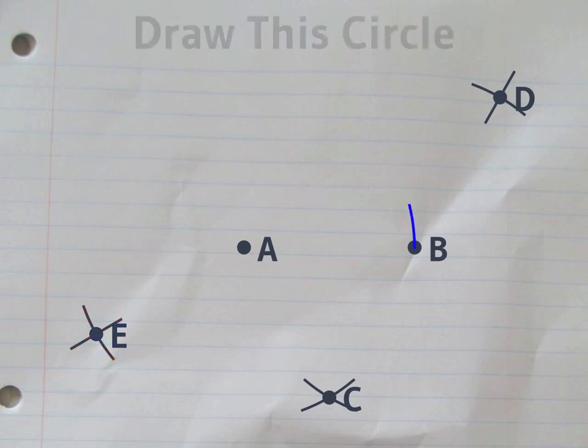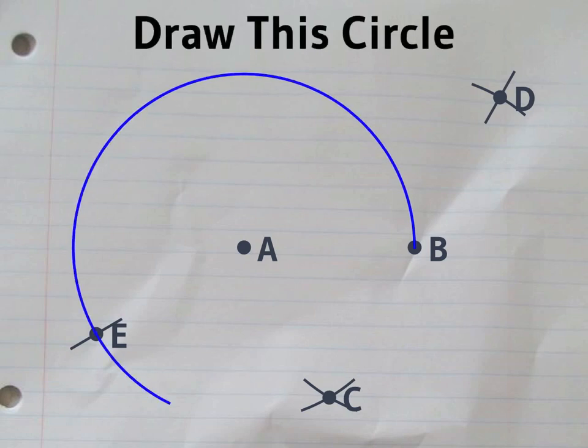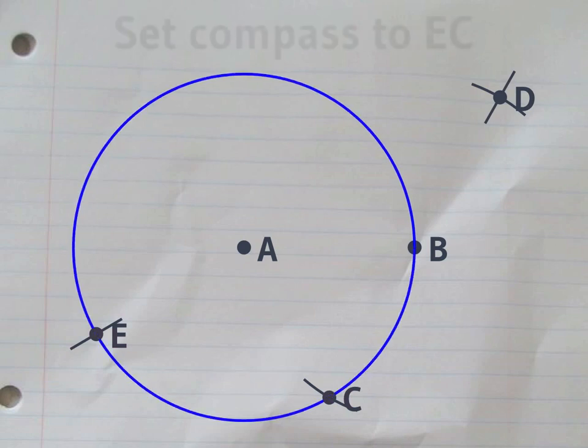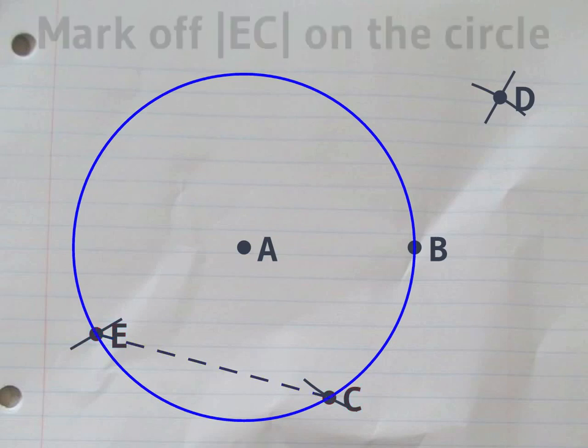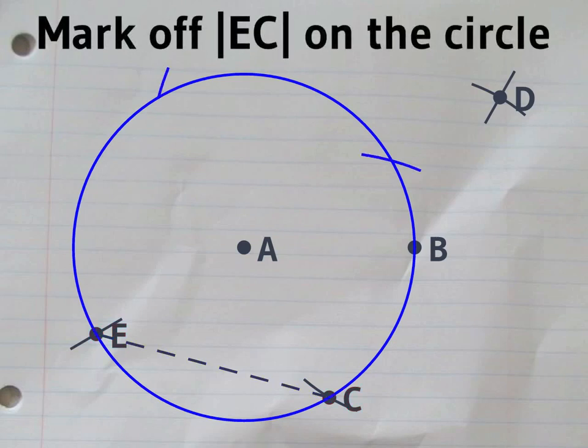We're almost done. Let's draw the original circle again. The distance between E and C is exactly the length of the edge of the square inside that circle.